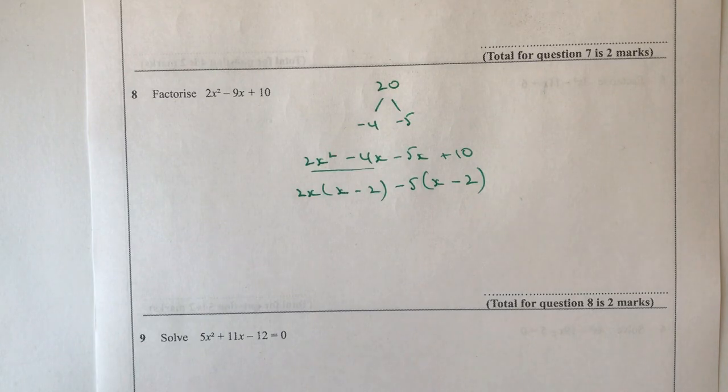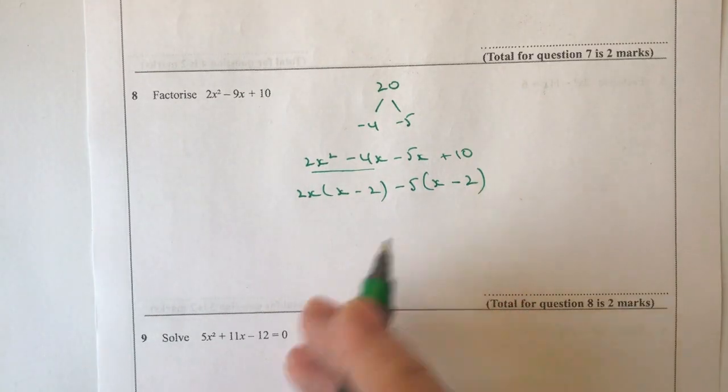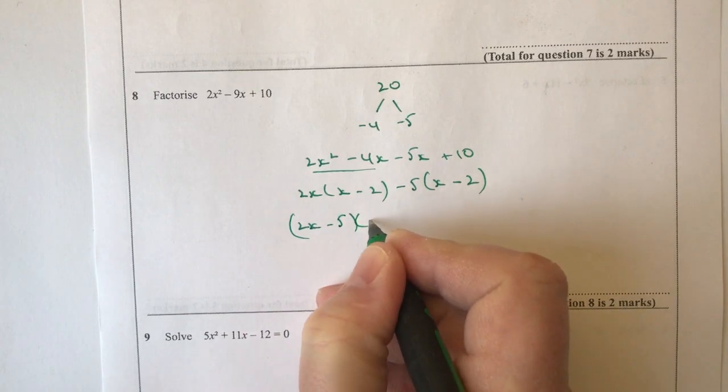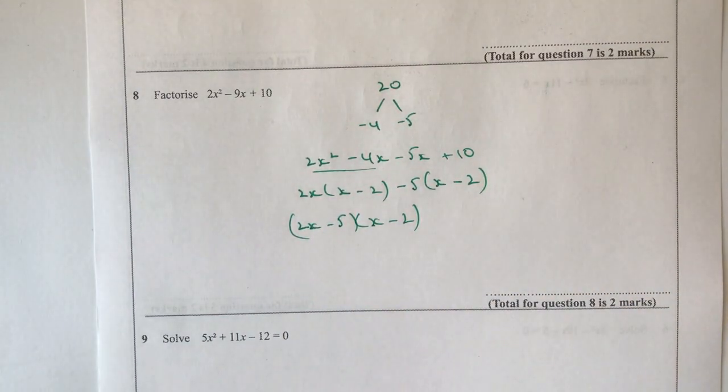OK, so now I'm in a position where I've got two common bracketed terms, which is x minus 2 there and x minus 2 here. So I could rewrite that as 2x minus 5, and then brackets x minus 2. And that's the factorisation of this particular expression.